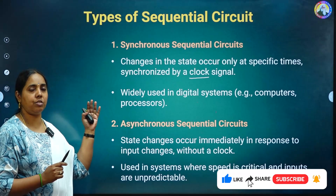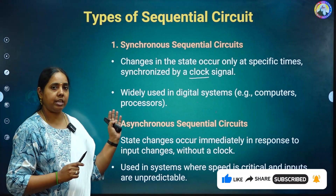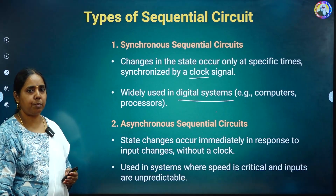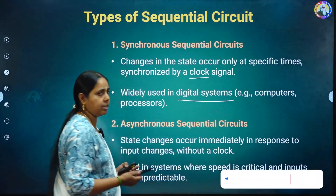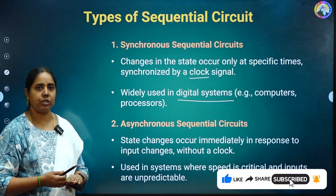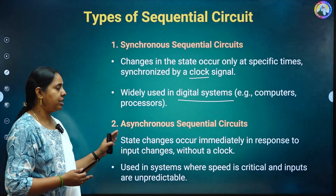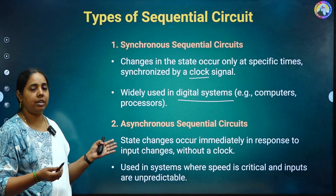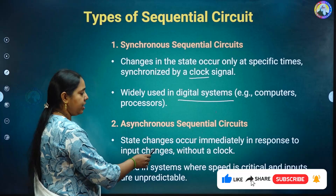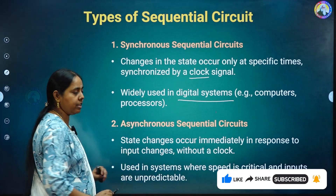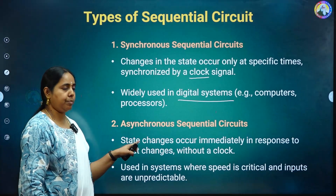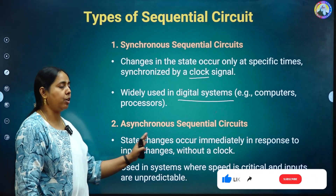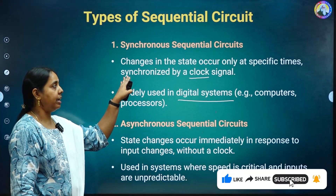Synchronous sequential circuits are widely used in digital systems. Examples include computers and processors. Coming to the asynchronous sequential circuit, it doesn't depend upon the clock — even if you change the clock, the output won't change. But if you change the input, the output will change. So state changes occur immediately in response to input changes, without a clock.